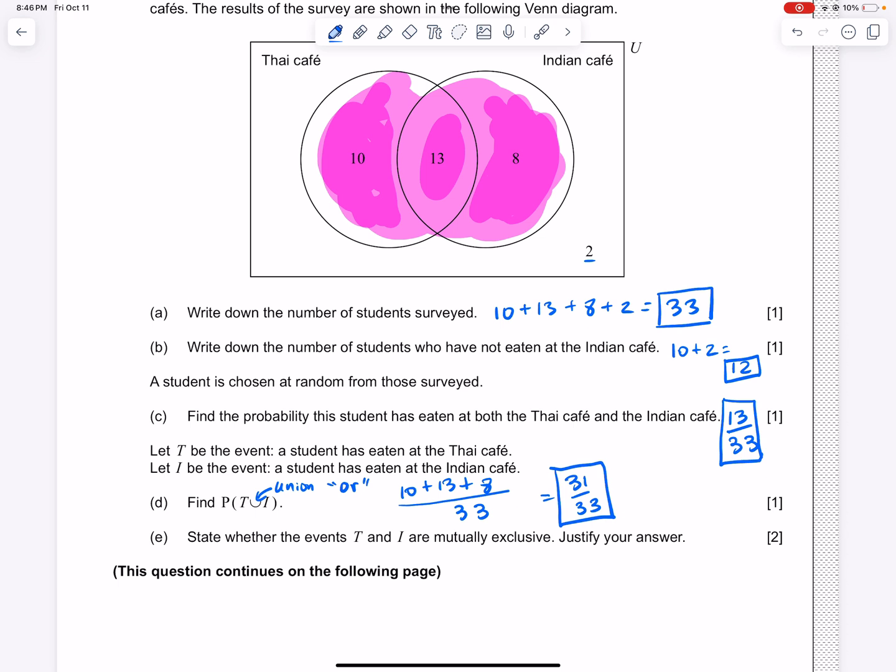And so our next question says state whether the events T and I are mutually exclusive. So to answer that, you do have to know what mutually exclusive means. Mutually exclusive means that there is no crossover. That means no one went to both the Thai Café and the Indian Café. That means either you choose one or the other. Never both.